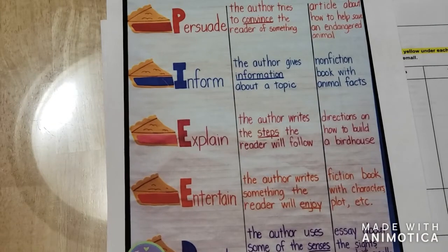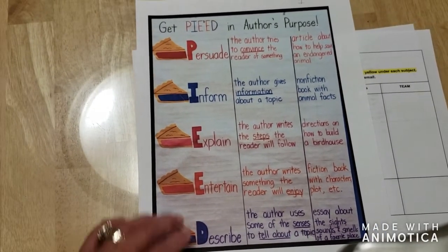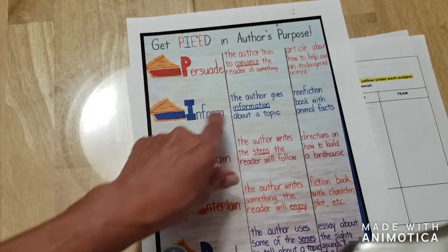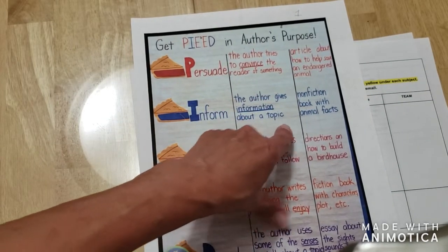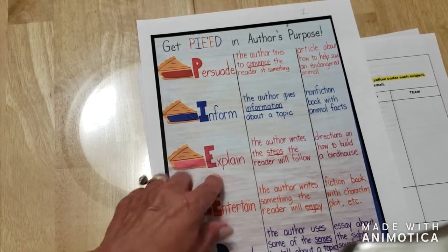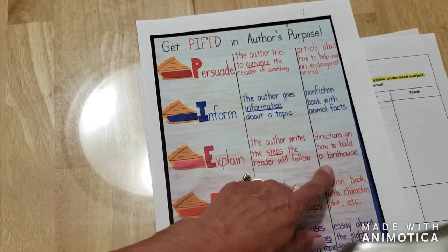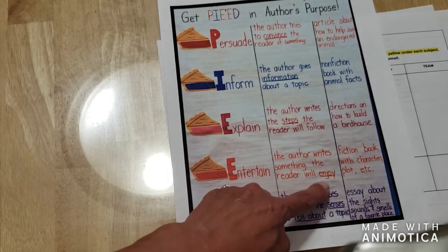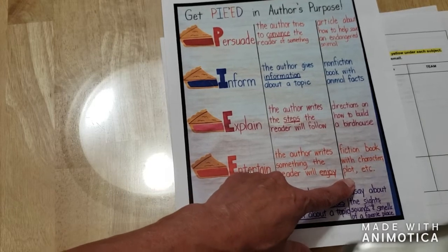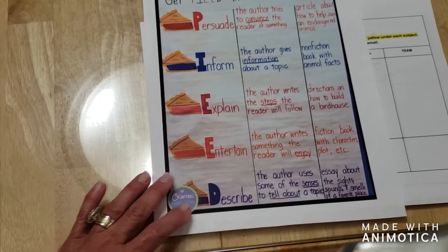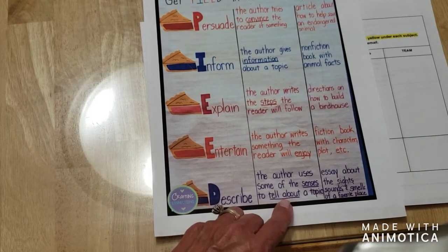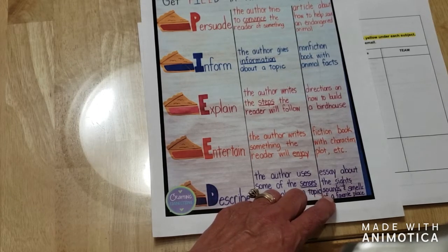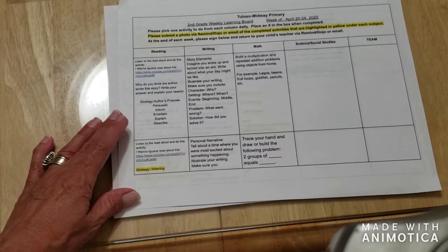If you remember our anchor charts, most of us have this one — it's PIED. To persuade means the author tries to convince the reader of something, like an article about how to help save an endangered animal. To inform means the author gives information about a topic, like nonfiction books with animal facts. To explain means the author writes steps for the reader to follow, like directions on how to build a birdhouse or a recipe. To entertain means the author writes something the reader will enjoy, like a fiction book with characters and plot. And to describe means the author uses the senses to tell about a topic, such as essays or reports about sights, sounds, and smells of a favorite place.